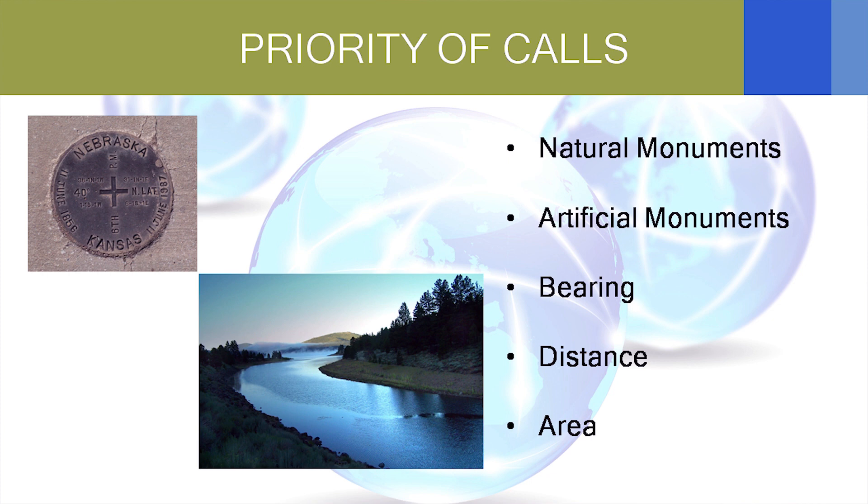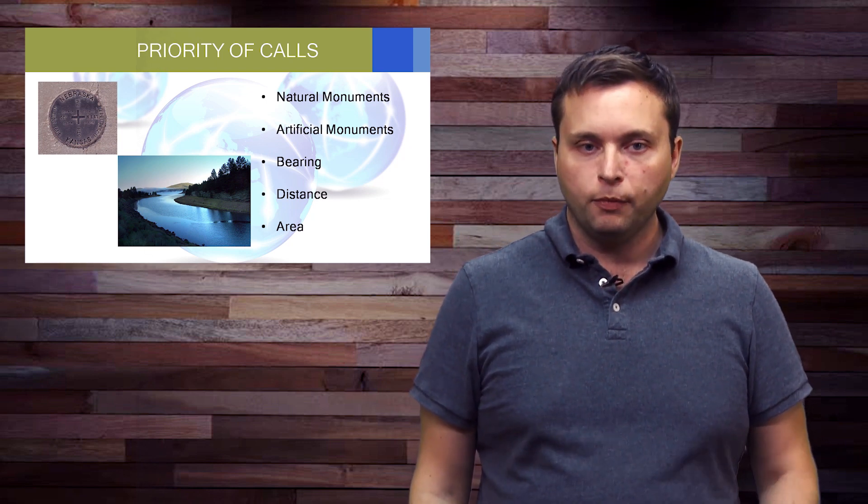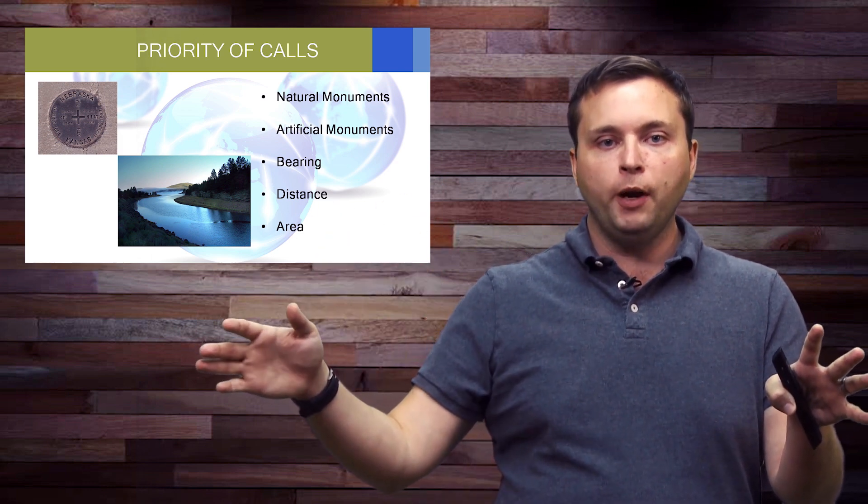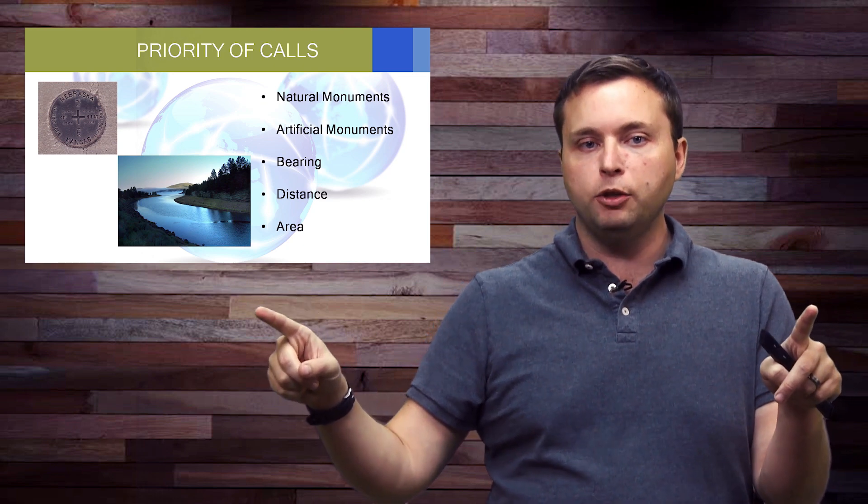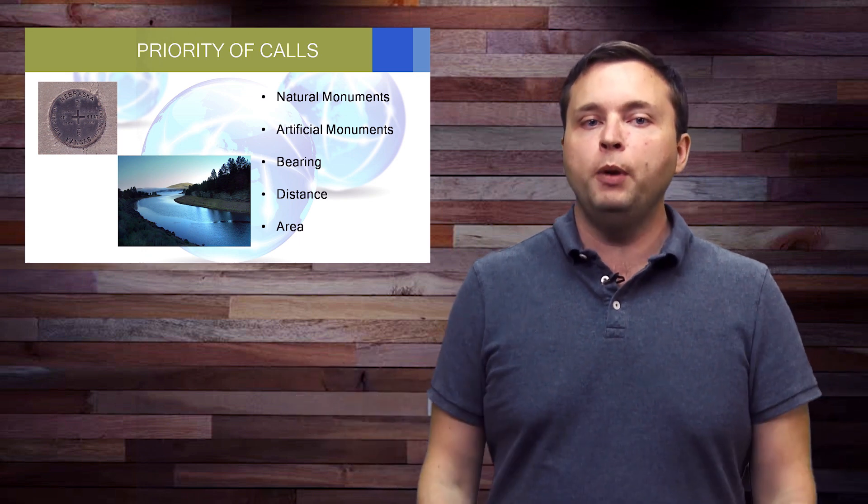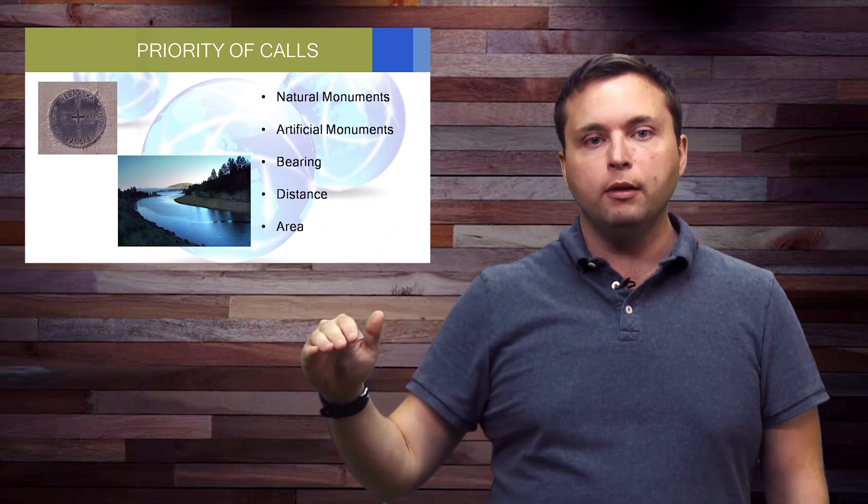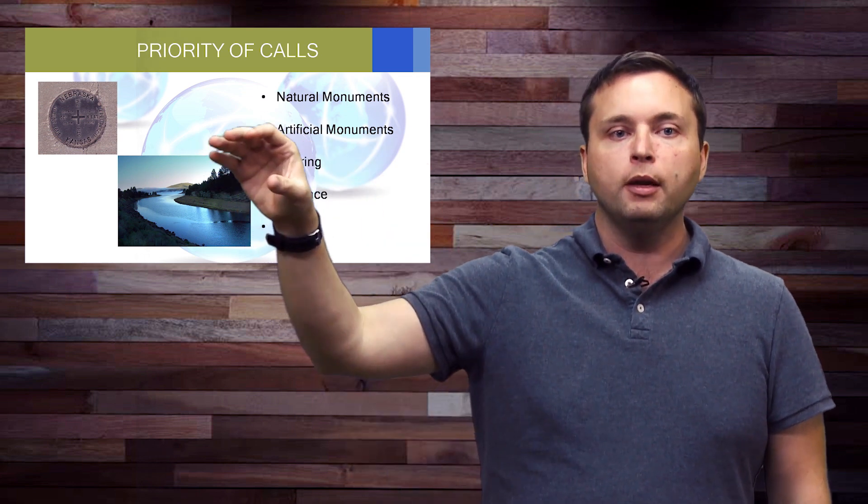Last but not least, we've got the priority of calls. And the priority of calls is an evidence conflict. We've got natural monuments, artificial monuments, bearing, distance, and area. A legal description says, beginning at the northwest corner of the parcel. Go 100 feet to an iron rebar. Fast forward 10 years. You find the northwest corner of the parcel and you find the iron rebar. But the actual measurement is 102 feet. Do you hold the rebar or do you hold the distance? Your choice. Well, based on the priority of calls, artificial monuments like rebar have a higher dignity than distance. So, your job is to hold the rebar and ignore the distance.